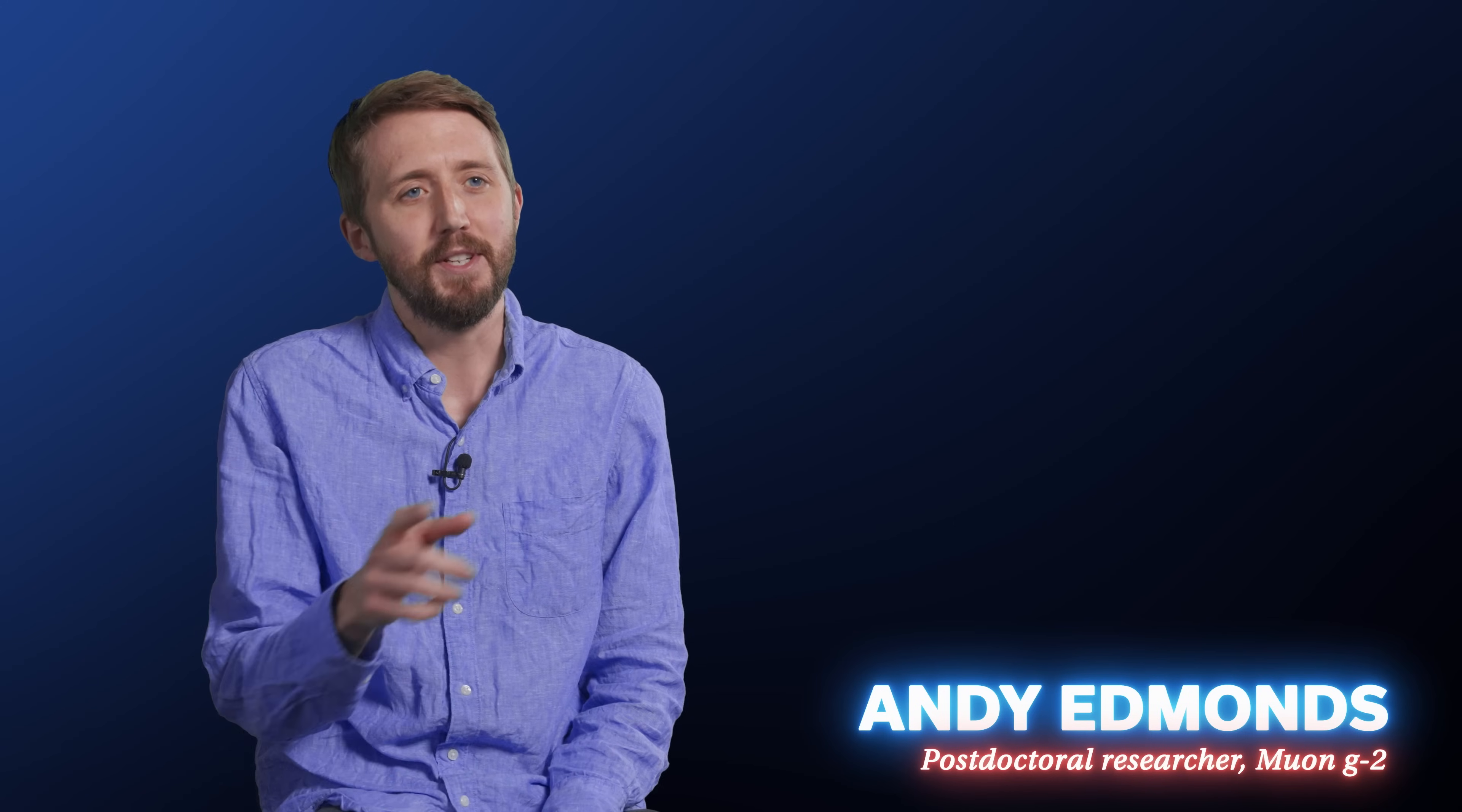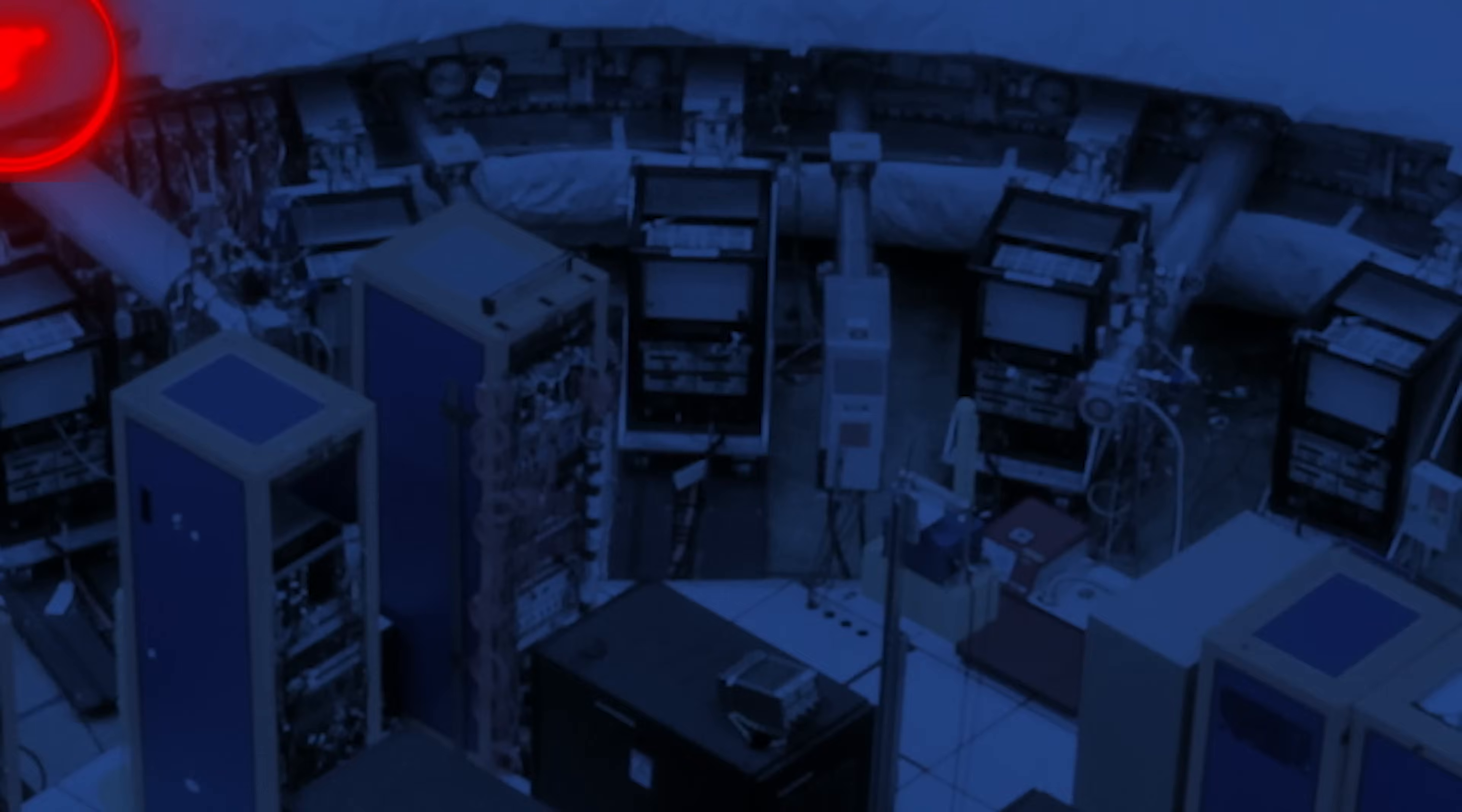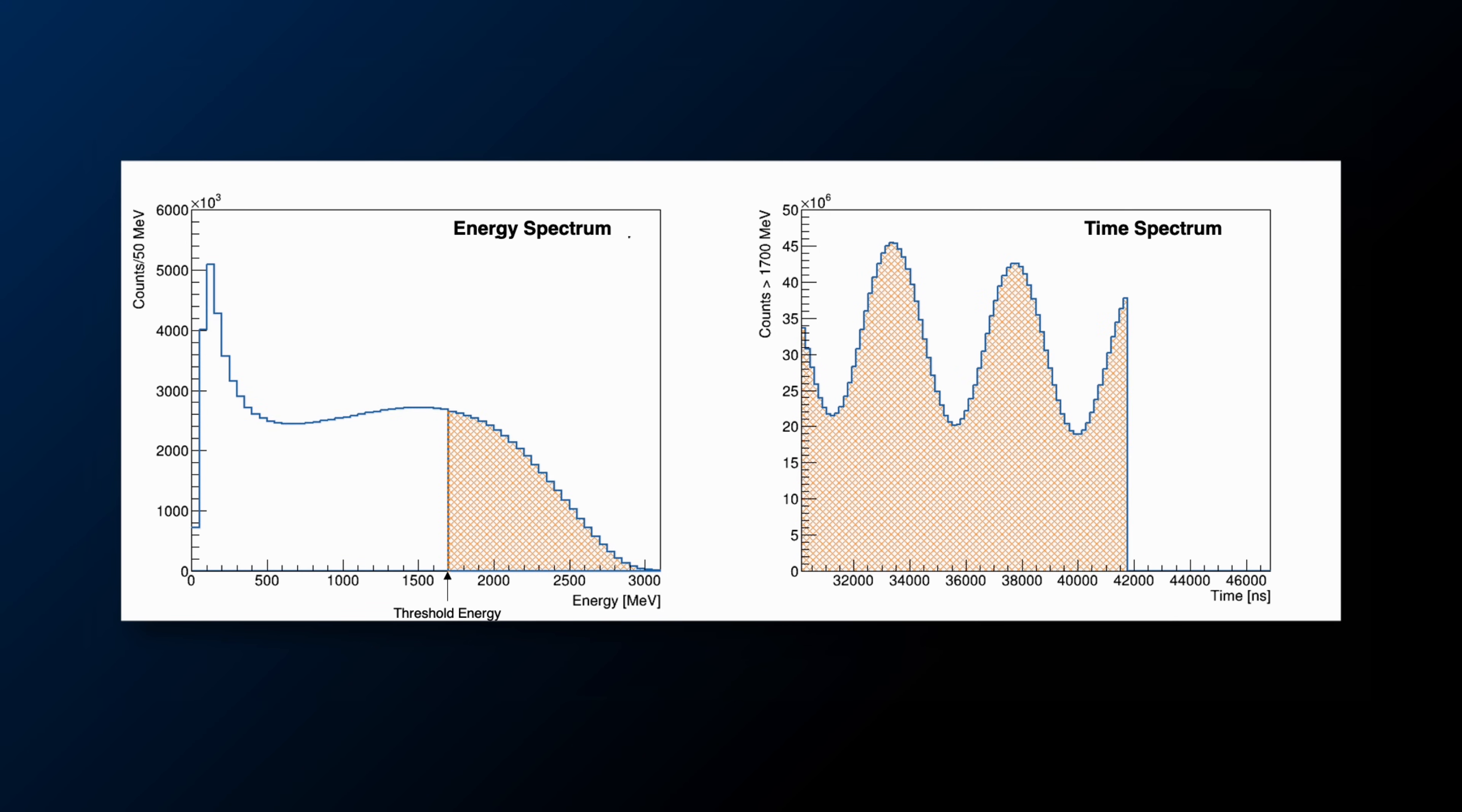The muons go round and round in circles. Eventually those muons will decay, producing a positron, which is a positively charged electron. That positron will enter our detectors where it produces light that we can detect and measure, and then we measure its energy and time of arrival.